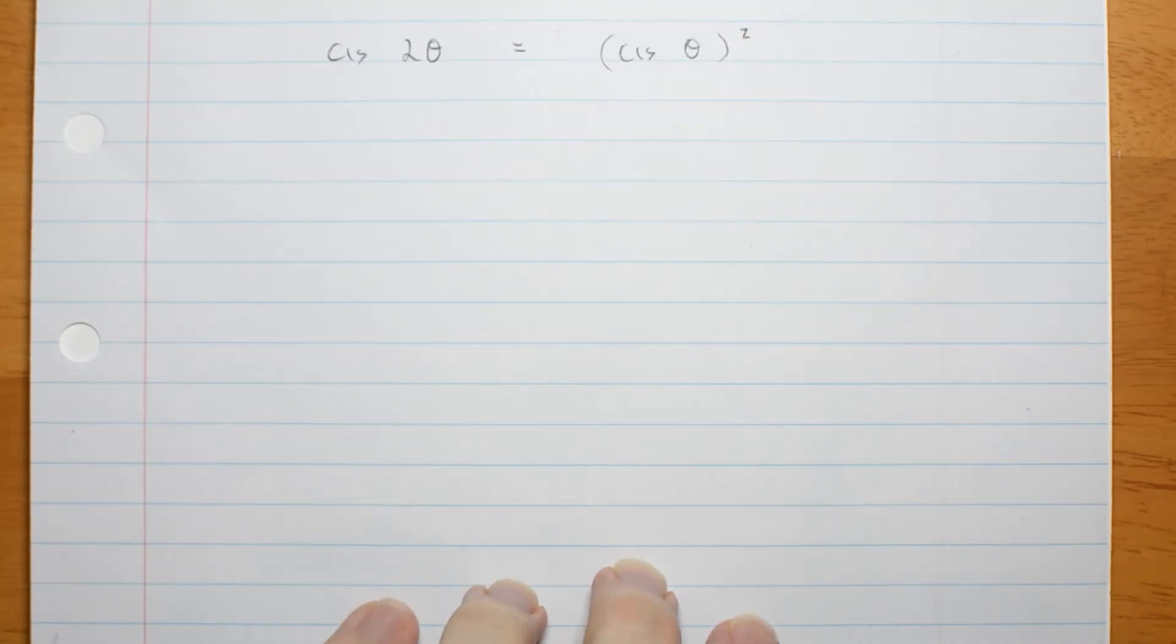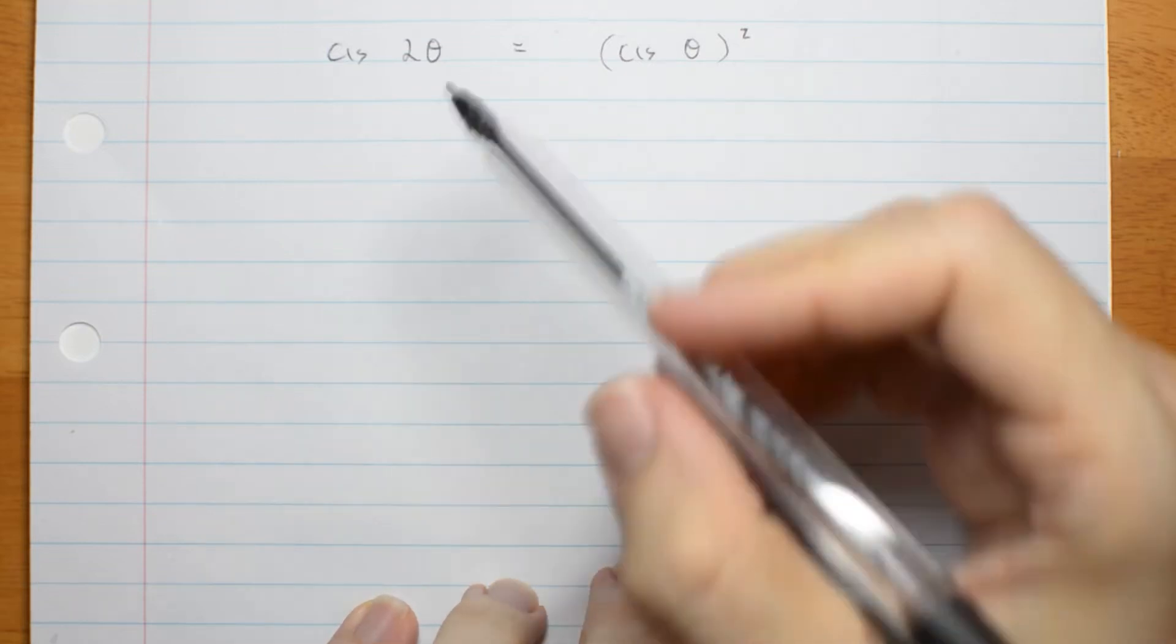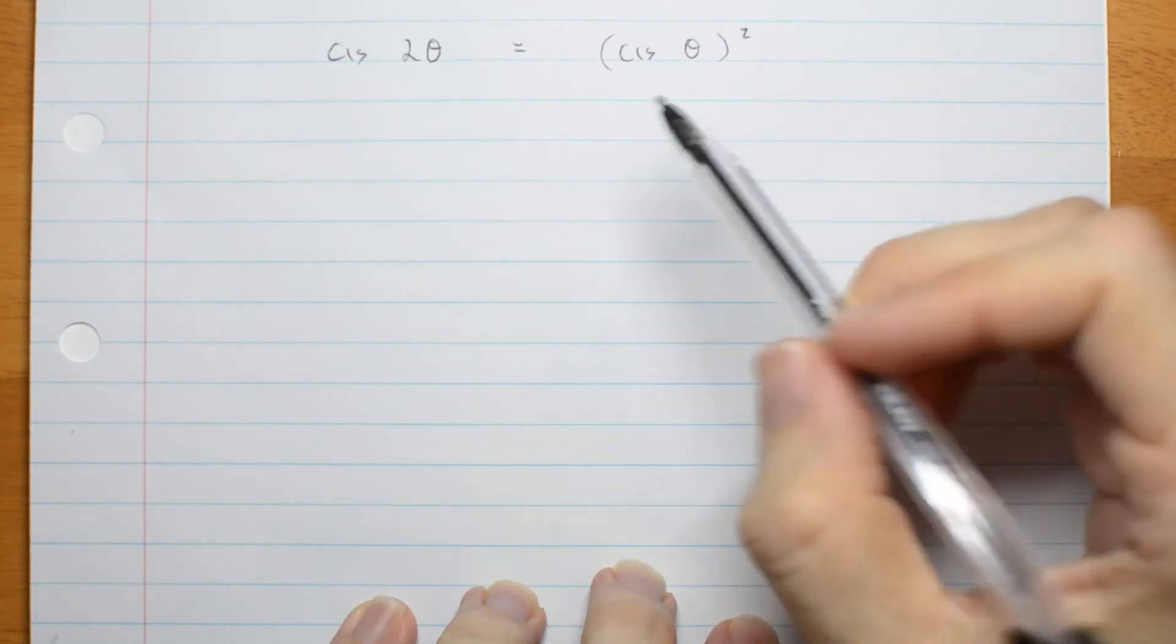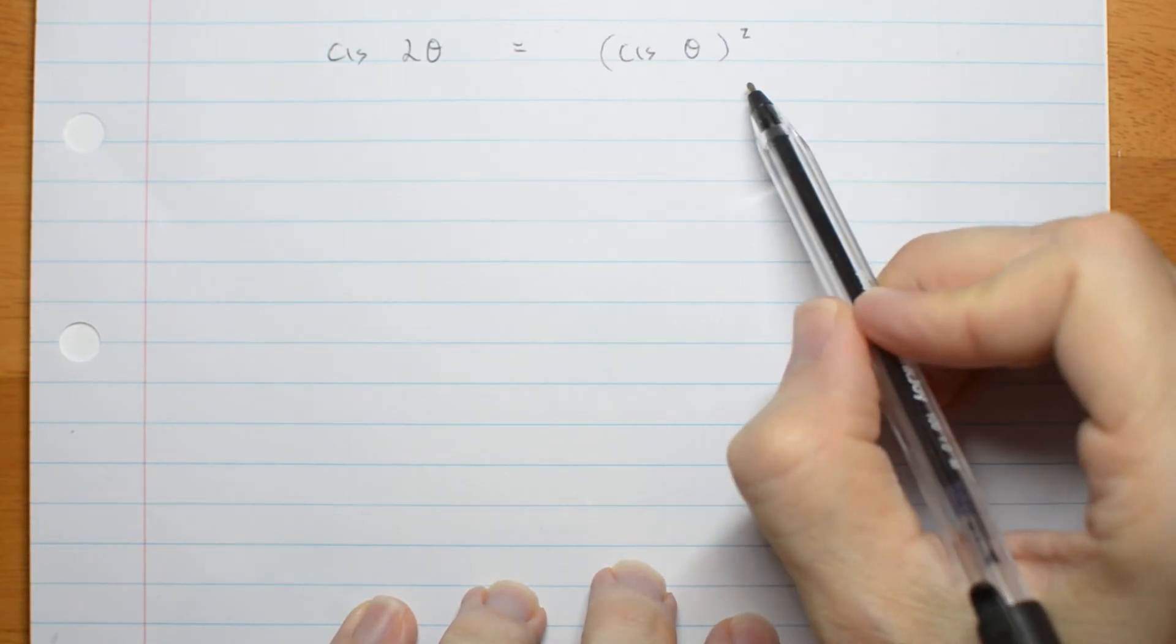Now, here's a clever thing you can do with De Moivre's Theorem. Suppose I start with cis 2 theta. De Moivre's Theorem tells me that's the same as cis theta squared.